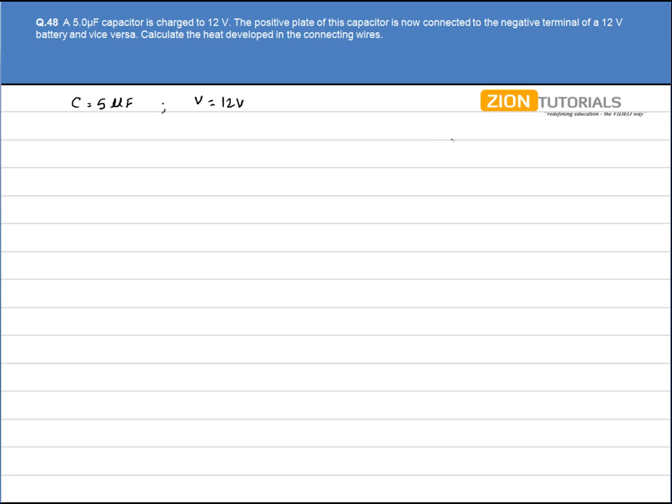Let's say initially we have a capacitor connected like this by a battery V.